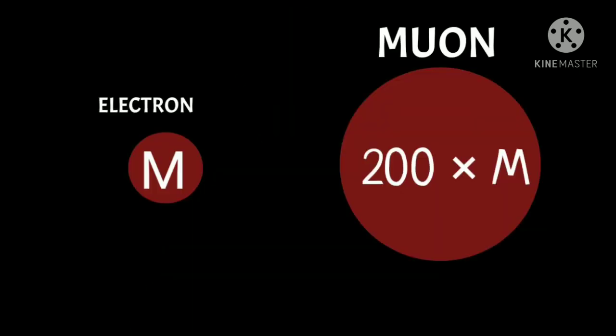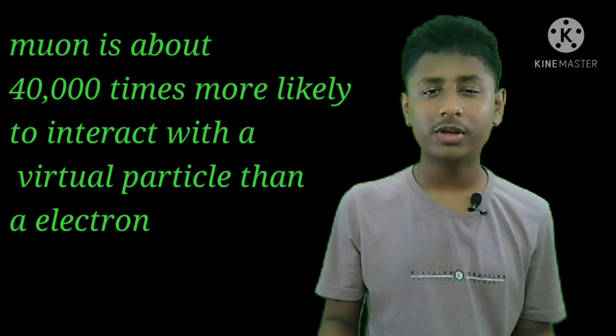This happened with the muon and not with the electron because the muon is about 200 times more massive than the electron, and the probability of an interaction with a virtual particle is proportional to the mass of the particle squared. That means a muon is about 200 squared, or 40,000 times, more likely to interact with a virtual particle than an electron.